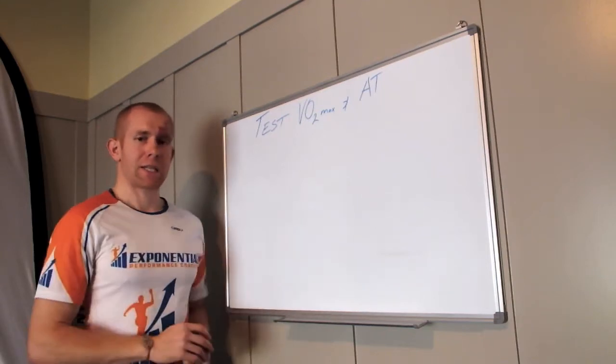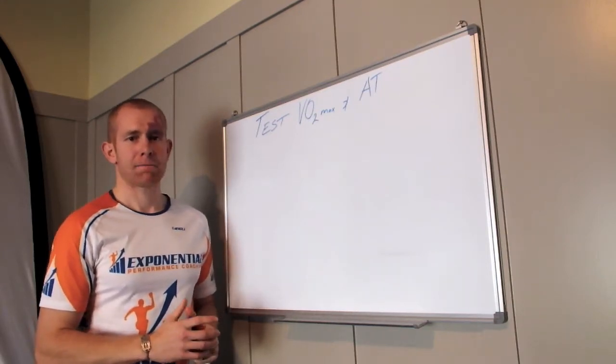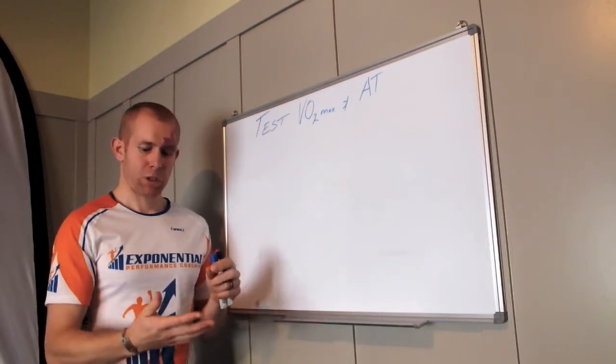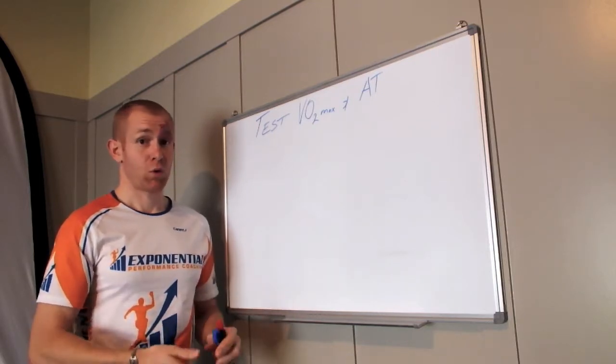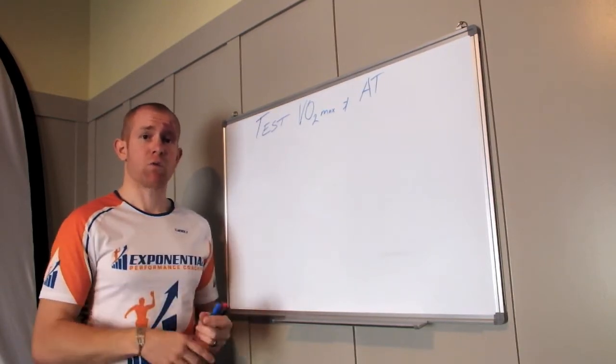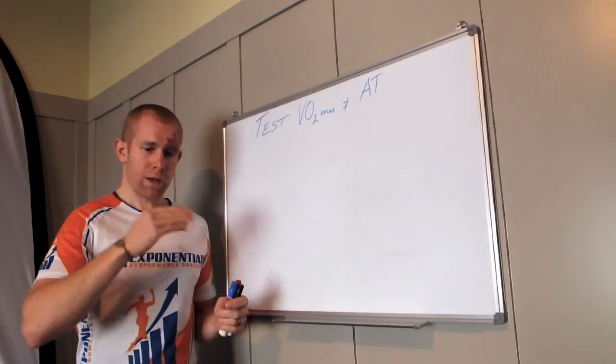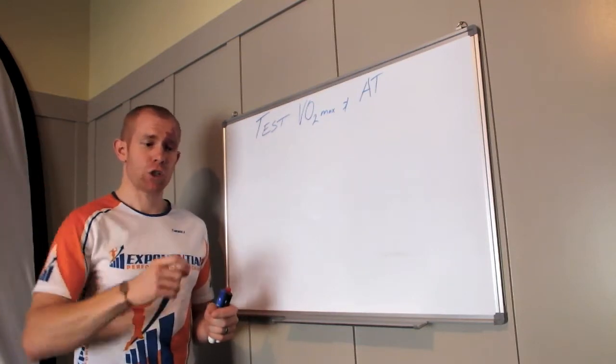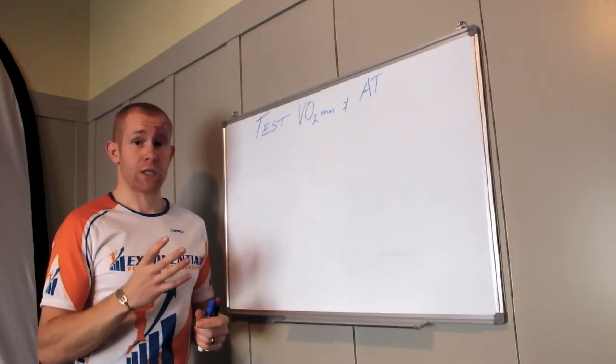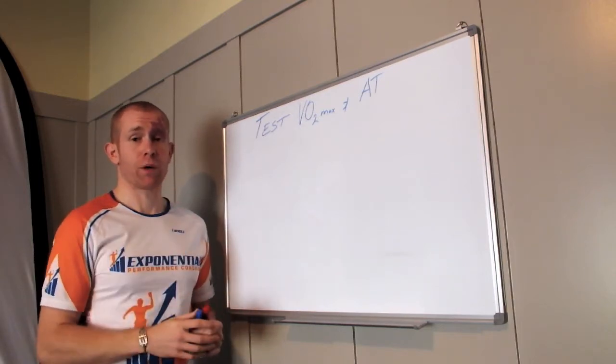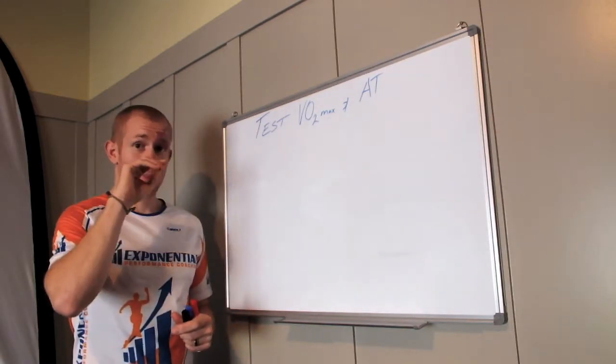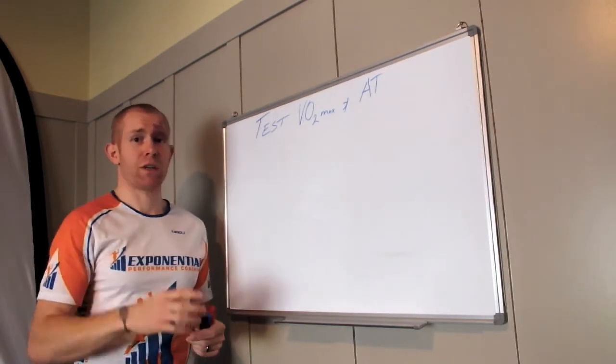When it comes to testing your VO2 max, the best way is in the lab. You jump on a bike, treadmill, or rowing machine depending on your sport, you've got a mask on, and they'll ramp you through a protocol that gets harder and harder, usually in short blocks. As you ramp up, they measure how much oxygen your body is consuming. When that consumption reaches its peak and plateaus, that's your VO2 max.